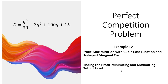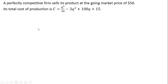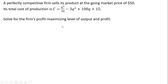In this video we're going to do another perfect competition problem. Here we're dealing with a cubic cost function, which will give rise to a U-shaped marginal cost function. And what we want to do is find the profit maximizing and minimizing output level. A perfectly competitive firm sells its product at the going market price of $50 a unit, and its cost of production is given by the following equation. We want to solve for the firm's profit maximizing level of output and profit, along with the profit minimizing level of output.